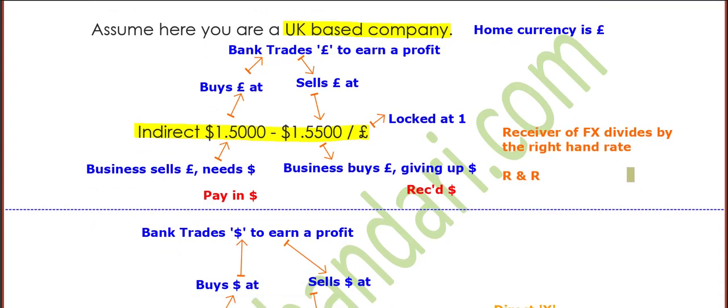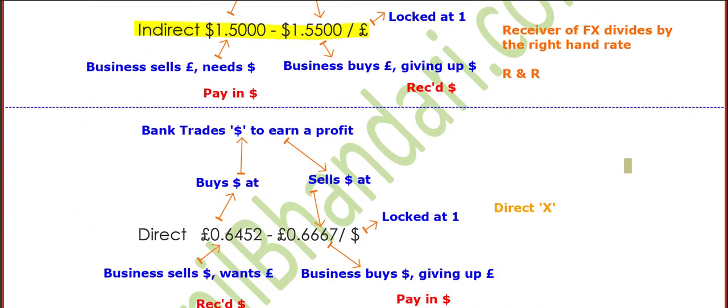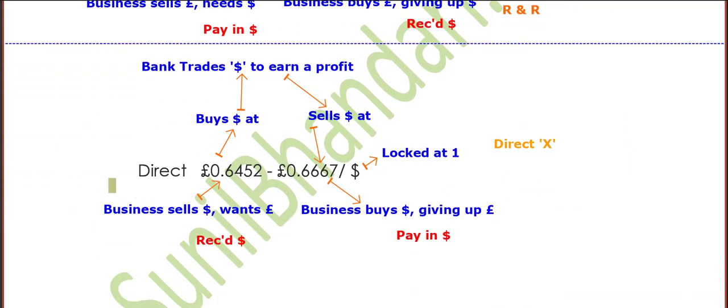Now let's move to the direct presentation. When we move to the direct presentation, it is the foreign currency that is locked at one. Remember, we are still based in the UK. The foreign currency is locked at one and it is measured in the home currency — in this case, sterling. Again, low: 0.6452, high: 0.6667.